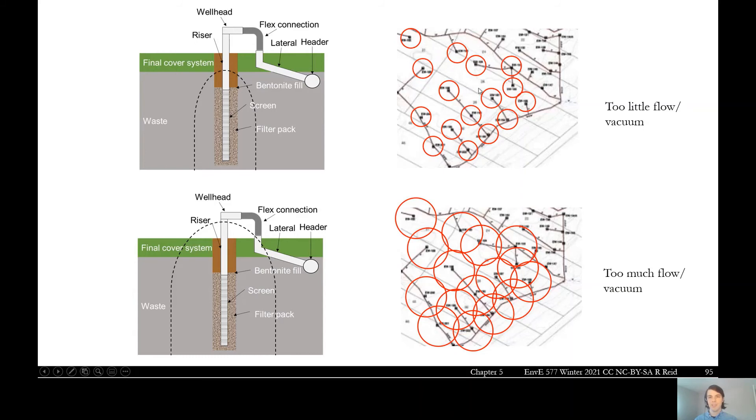So all these areas in between the circles, that gas is not necessarily being pulled into the collection system. It'd be more likely to try and make its way out of the surface or through some other pathway instead of the system. So this is too little vacuum or too little flow to really effectively remove gas from this mass of waste.